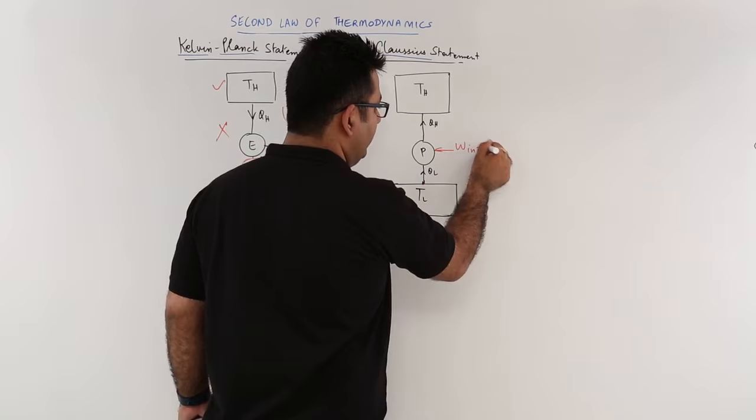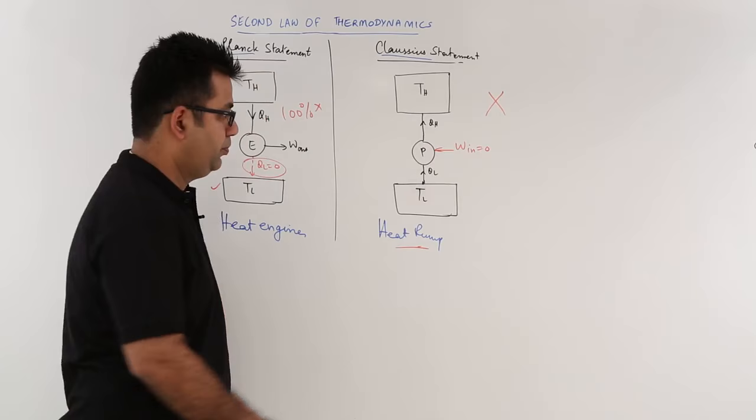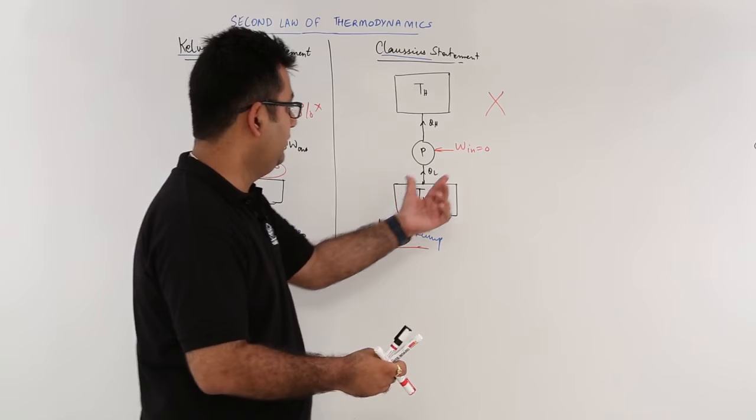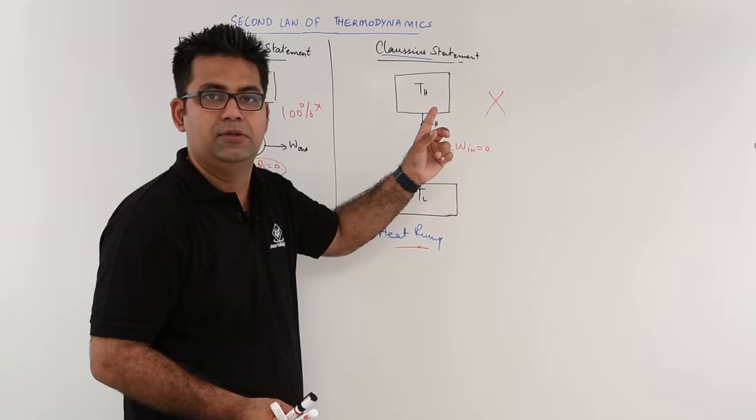Spontaneous flow of heat from a low temperature source to high temperature is not possible spontaneously. You need to have some energy input which is making this unnatural flow take place.